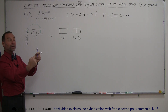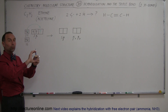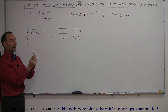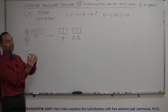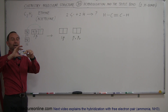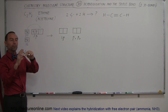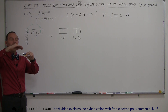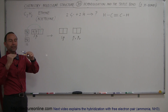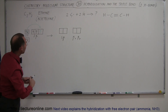The remaining 2p orbitals — one in the z direction (straight up and down) and one in the x direction (in and out of the board) — will remain intact. These are now able to make pi bonds by simply bending towards the other carbon on the other side. That's how the p orbitals will form pi bonds: one above the molecule and one in the plane of the molecule.